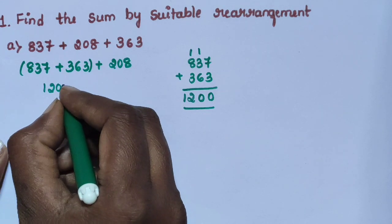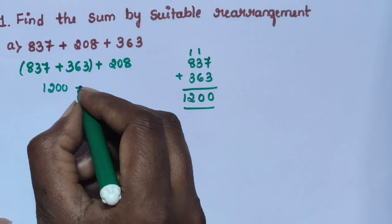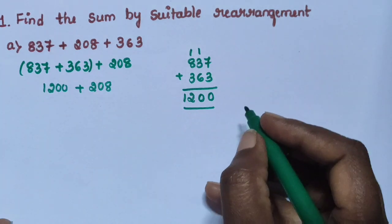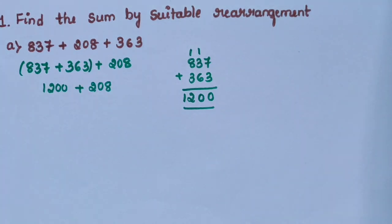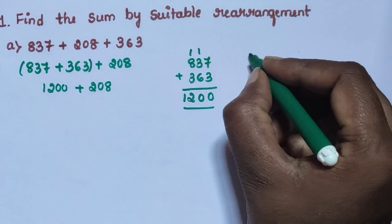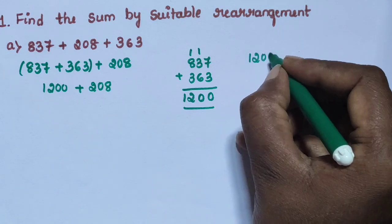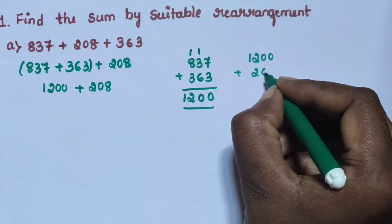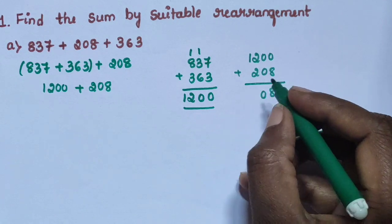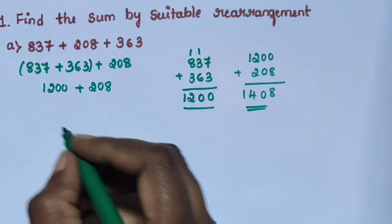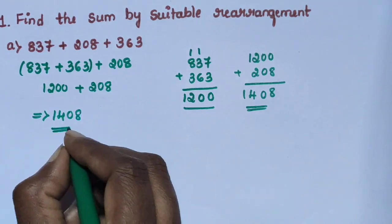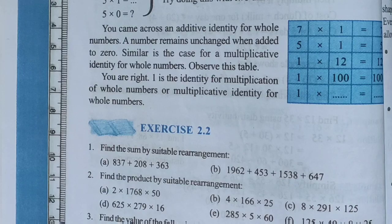Then write 1200 plus 208. 1200 plus 208: 8, then 0, 2 plus 2 is 4, then 1. The answer is 1408.